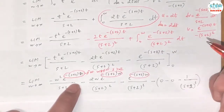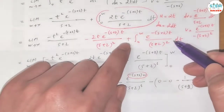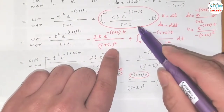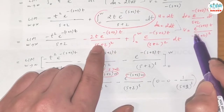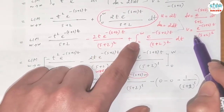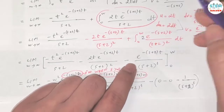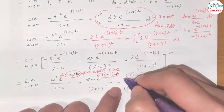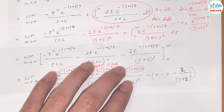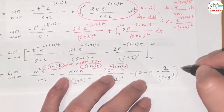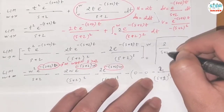I just realized I made a minor mistake — I didn't write the 2 in the integration by parts step. So I need to include 2 in the terms here. Our final answer is therefore 2 over s plus 2 cubed.